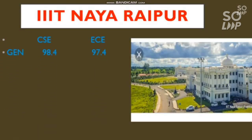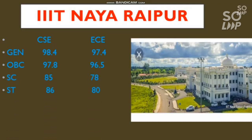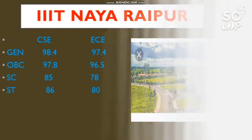The next institution is Triple IT Nairaipur. The cutoff for CS and EC branches: General requires 98.4 for CS and 97.4 for EC. OBC requires 97.8 and 96.5. SC requires 85 and 78 percentile. ST requires 86 and 80 percentile.